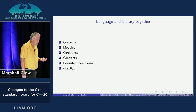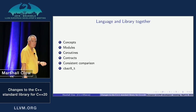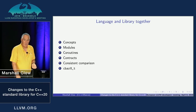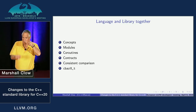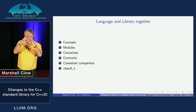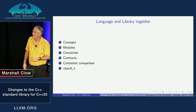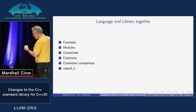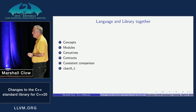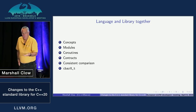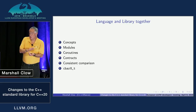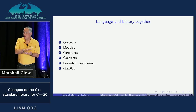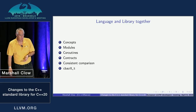Consistent comparison — sometimes called the spaceship operator — uses the operator <=>. It looks like a flying saucer. This is a way of reducing a lot of boilerplate so you can write just equality and less-than comparisons for your type and have all the rest synthesized for you.